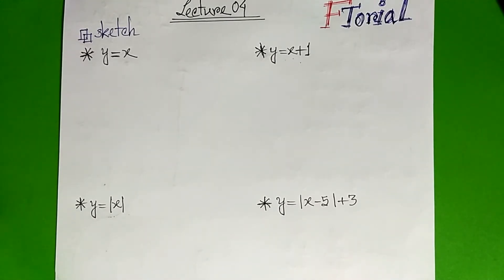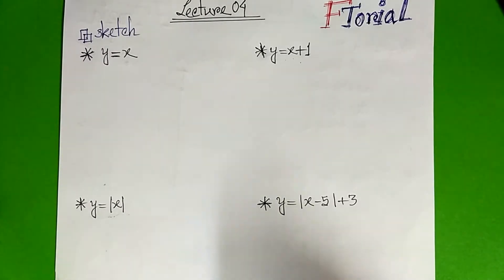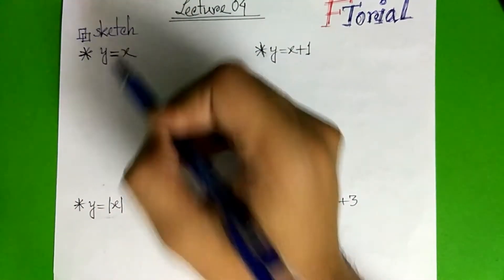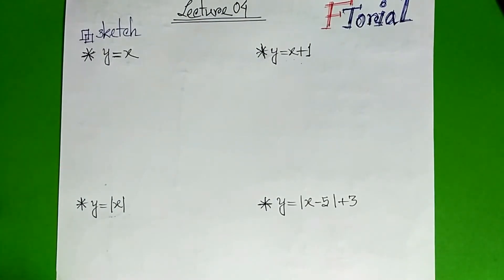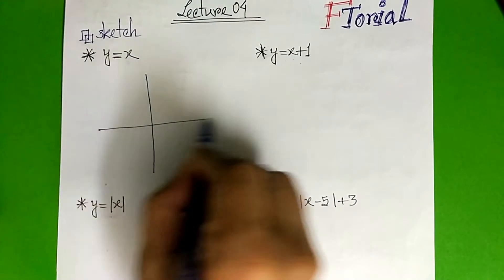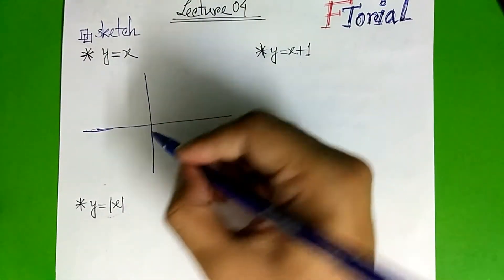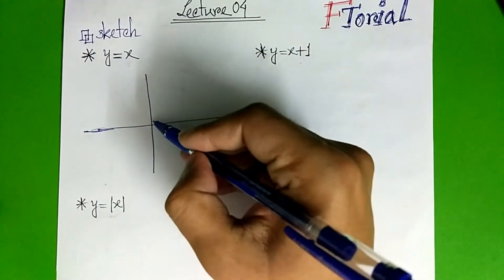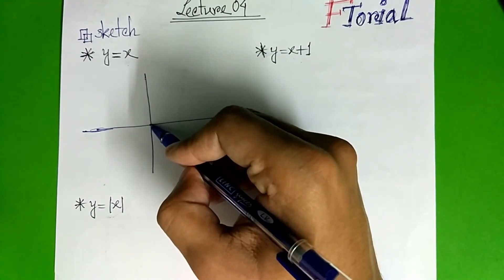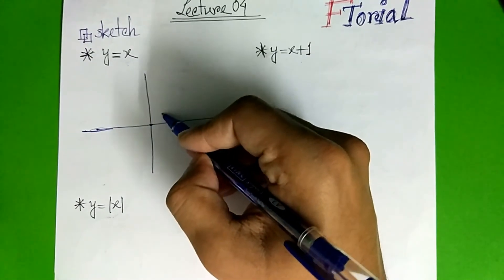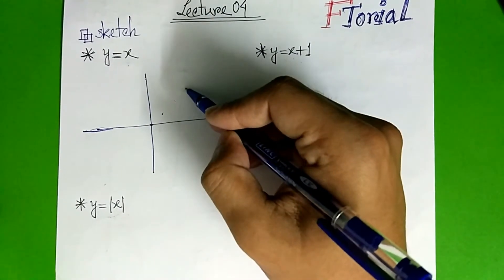Here, we have a parabola. So, y equal to x is the sketch. x equals 0, y equals 0. Here, point: x equal to 1, y equals 1. x equal to 2, y equals 2. x equal to 3, y equals 3.